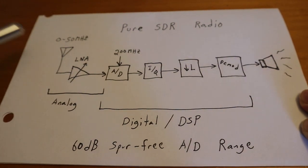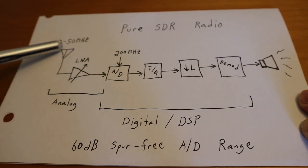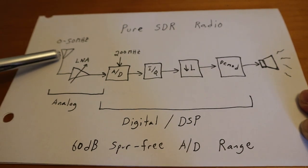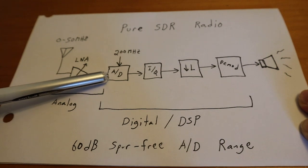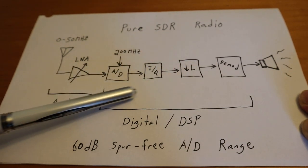So this is the proposed design, basically just got an antenna plug comes in, goes into an amplifier, and right to the A to D, and everything else is digital.